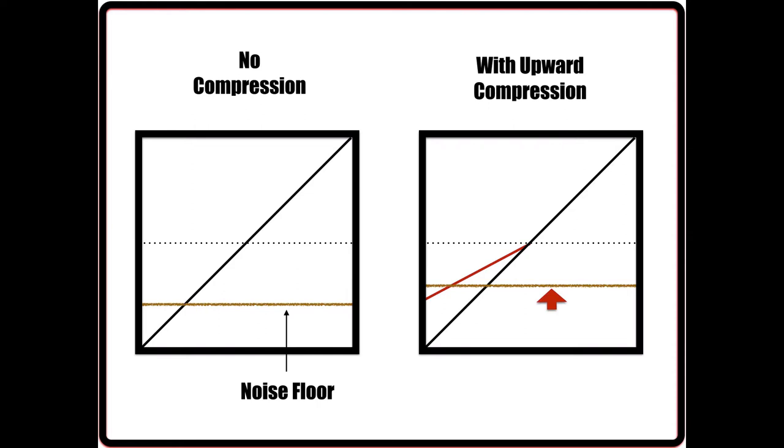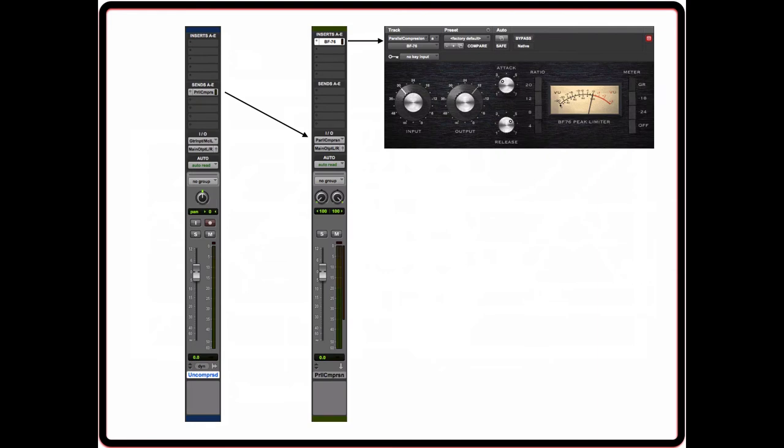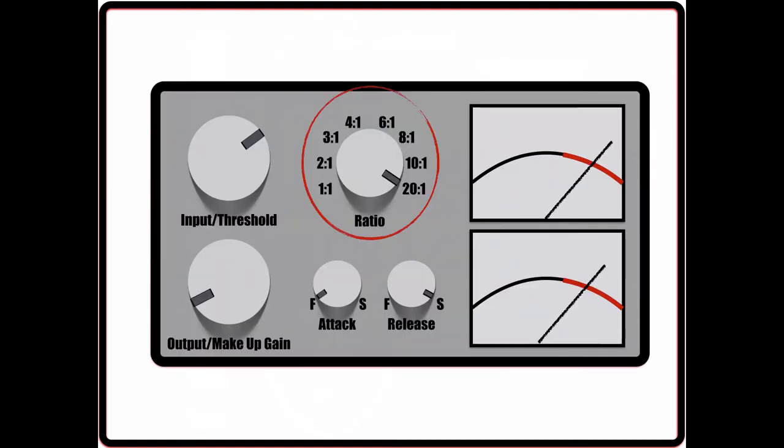This is where parallel compression really shines. The way parallel compression works is by sending the original signal into two paths, one of which goes through its own original channel, and the other gets sent through a separate channel that has a compressor on it. This is where the name parallel compression gets its name. It's because the compression track runs parallel to the original signal. On the compression channel, the ratio parameter needs to be set rather aggressively, even to the point where it becomes a limiter. Along with that, the threshold needs to be set rather low so that the signal gets limited quite often.